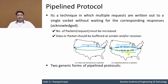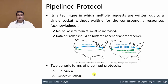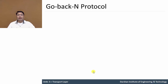Pipeline protocols are categorized into two forms. The first pipelined protocol is the Go-Back-N protocol and the second is the Selective Repeat protocol. Now let's understand the Go-Back-N protocol first.